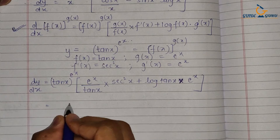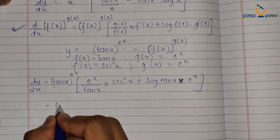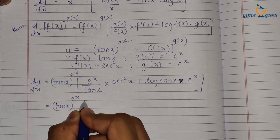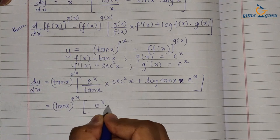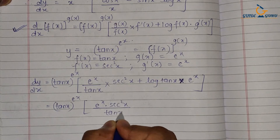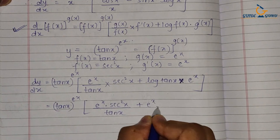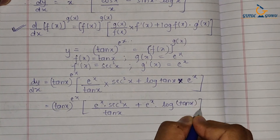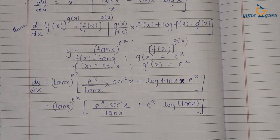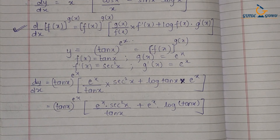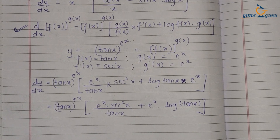Writing the final result: dy/dx = tan(x)^(e^x) · [e^x · sec²x / tan x + e^x · log(tan x)]. We are done. With practice you can calculate derivatives of this kind of function within five seconds.